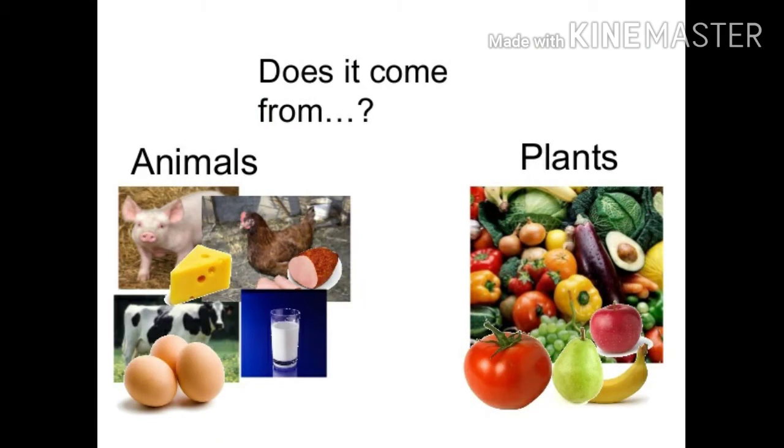Where does it come from? Plants like vegetables and fruits come from plants. So these are called plant products.